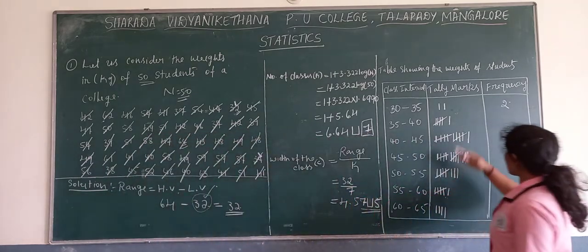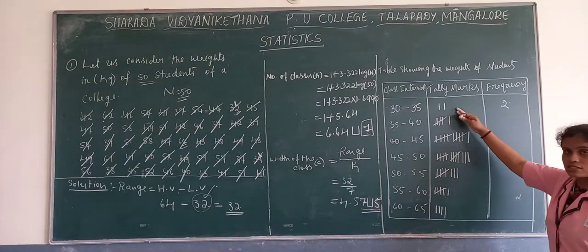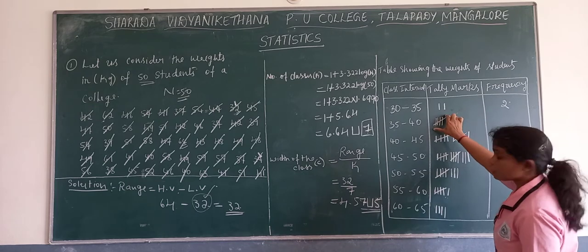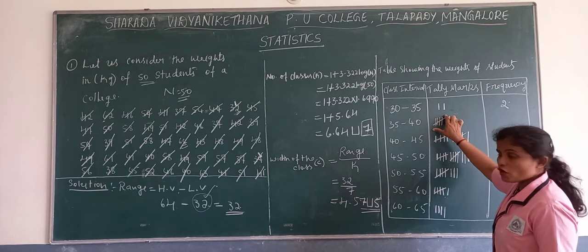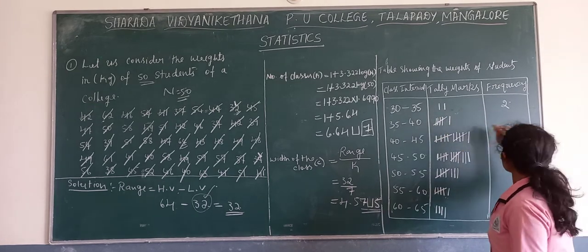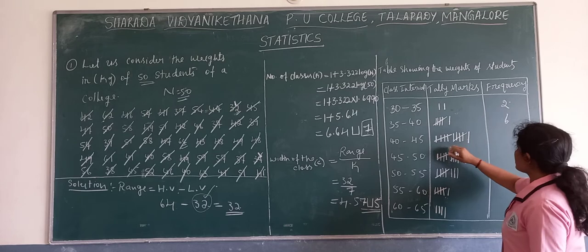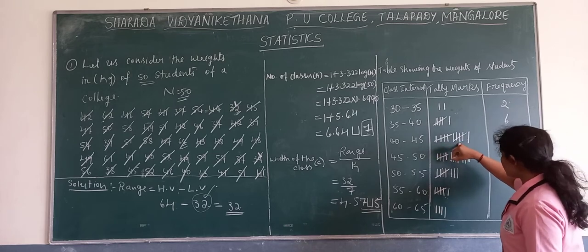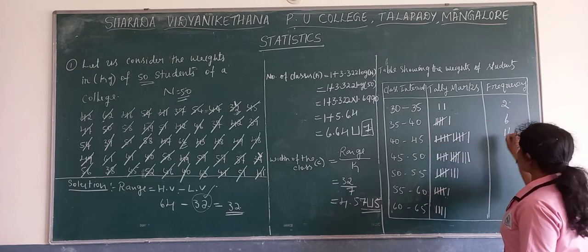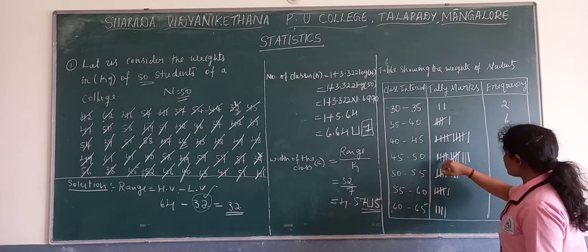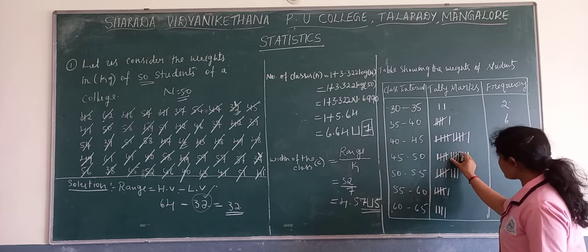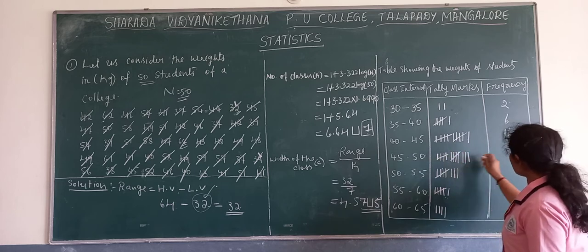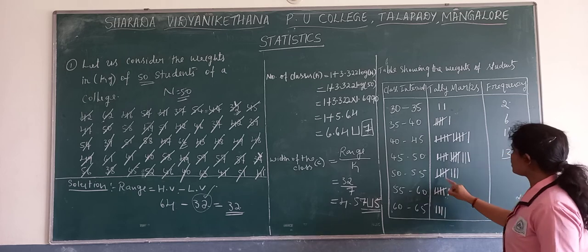Now, on the tally marks — here it is 2. Here this group, it is a group of 5, so 5 plus 1 is 6. Here 5, here group of 5: 10, 11, 12, 13. Here is 13.